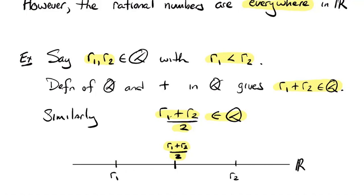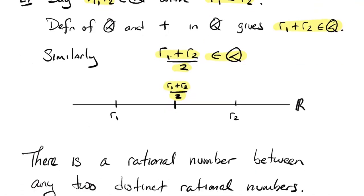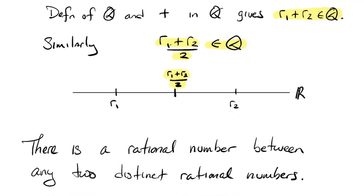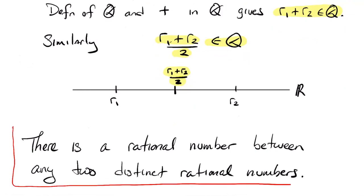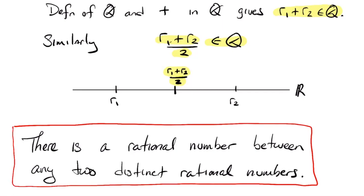So I want to make a definition that makes that more precise. The point I was making is that there is a rational number between any two distinct rational numbers. That's the summary of the picture above, and it's a slightly more precise way of saying the rational numbers occur, quote-unquote, everywhere on the real line.